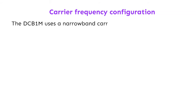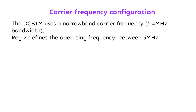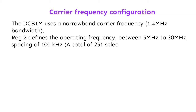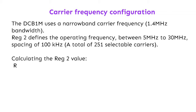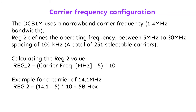Carrier frequency configuration: the DCB1M uses a narrowband carrier frequency with 1.4 MHz bandwidth. Reg 2 defines the operating frequency between 5 to 30 MHz, with a spacing of 100 kHz — a total of 251 selectable carriers. Calculating the Reg 2 value: Reg 2 equals (carrier frequency in MHz minus 5) multiplied by 10. Example for a carrier of 14.1 MHz: Reg 2 equals (14.1 minus 5) multiplied by 10, equals 5B hex.